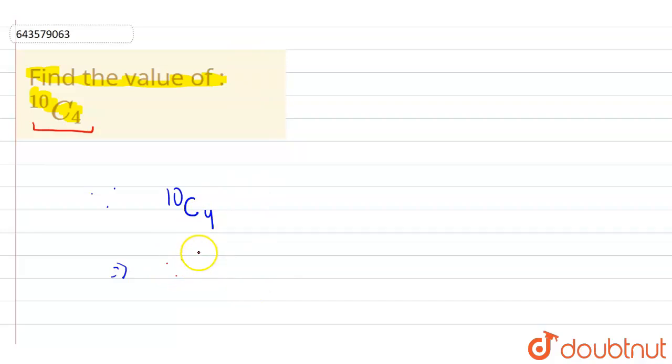since this is in the form of NCR and we know NCR is basically equals to N factorial upon R factorial into N minus R factorial. So similarly,